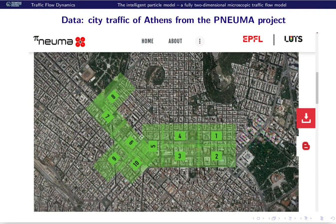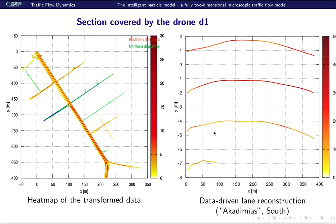In order to compare the model and the simulation with reality, I consider the trajectory data of a new traffic initiative, the Pneuma project. This, we have 10 drones observing several days of inner-city traffic of Athens. Now, I just picked a single drone, drone number one.